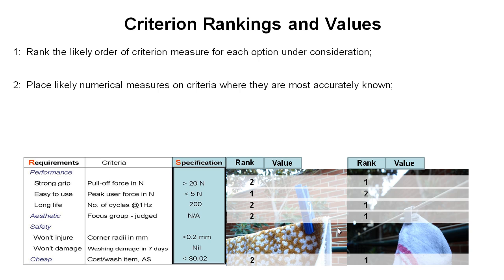So the next step in this process if we can't rely on the rankings alone is to now place likely numerical measures on the criteria where they're most accurately known. So we're going to have to have a guess at some of the values here at this stage. So we might start by guessing that the pull-off force for the conventional style peg is about 30 newtons. In terms of ease of use we might estimate 3 newtons to be able to apply this peg to our wet washing. We might guess 500 iterations or cycles before this peg breaks on us or is no longer capable of holding the washing with acceptable tension.